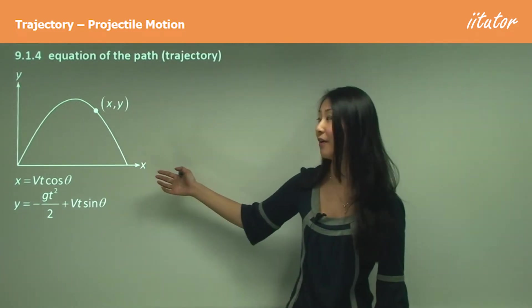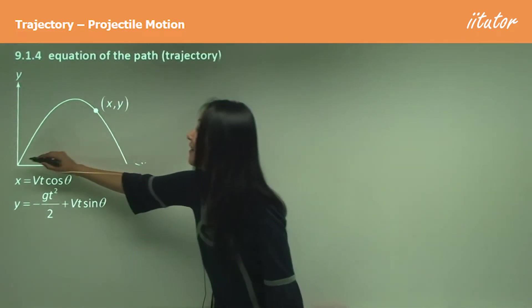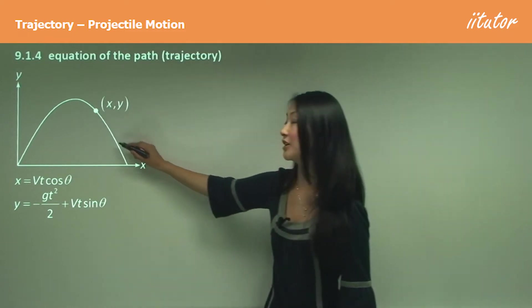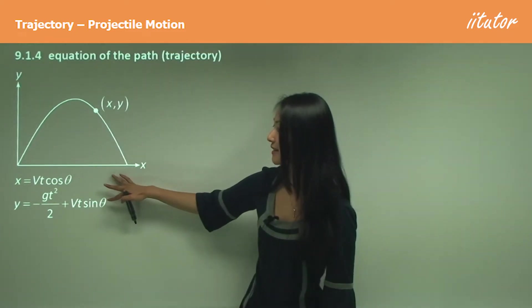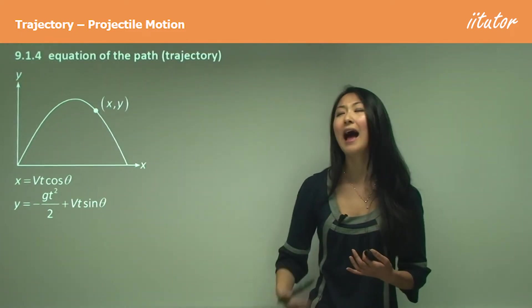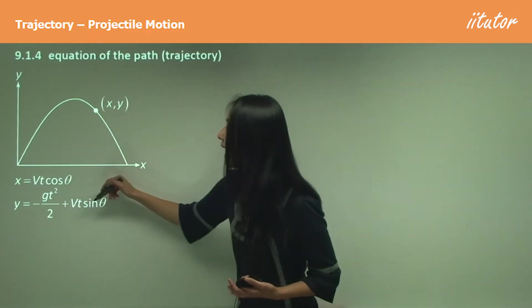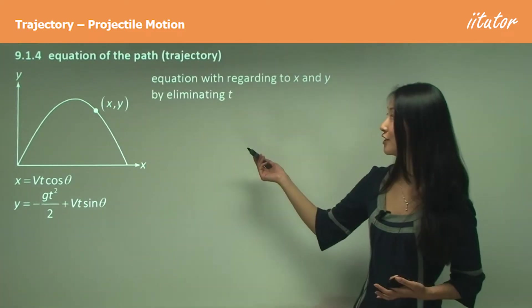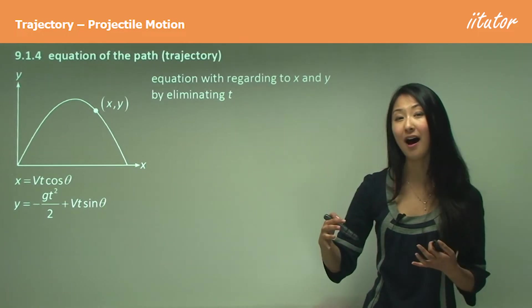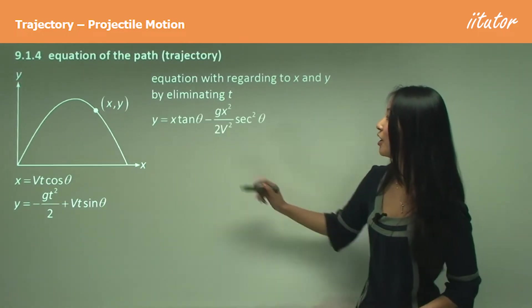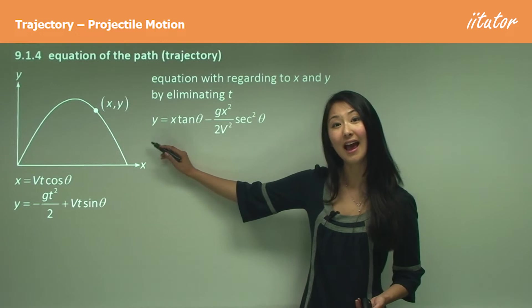But now I'm actually working out the path that the object goes on. These two equations here in terms of parametrics, I want you to think about the t as the parameter, whereas when we're working out the trajectory or the equation of the path, we only want it in terms of x and y.